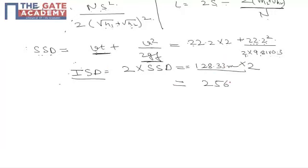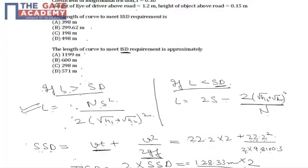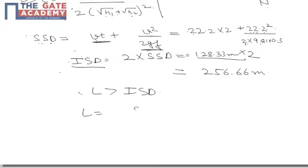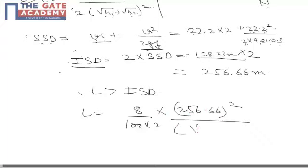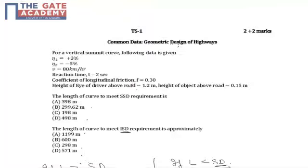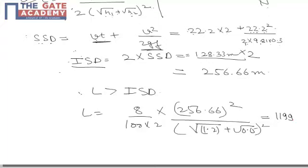So, here again assuming that L is greater than ISD and substituting all the values in this formula, length comes out as 8 by 100 into 2 into 256.66 square upon 1.2 plus 0.15 its square, which comes out as 1198.61 approximately, which is 1199 meter. And here we can see that yes,